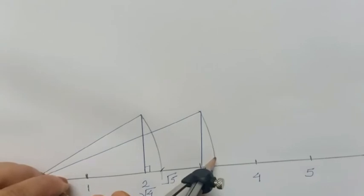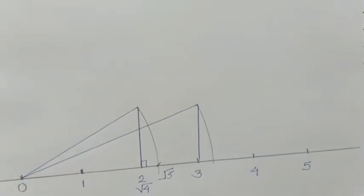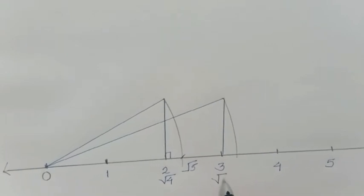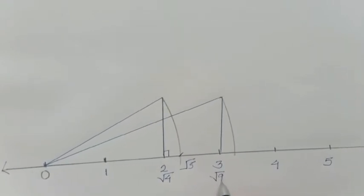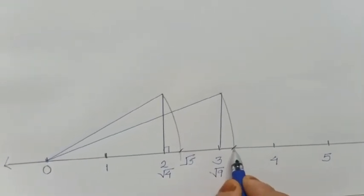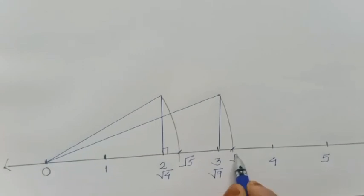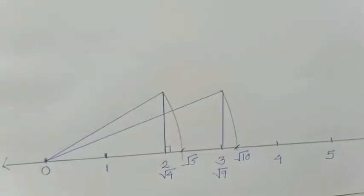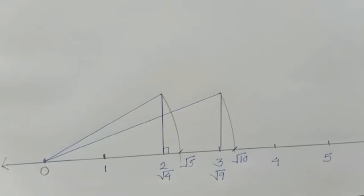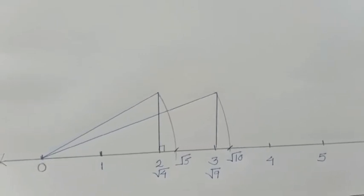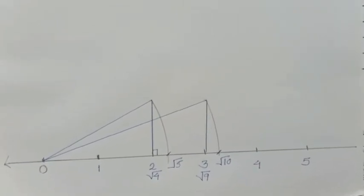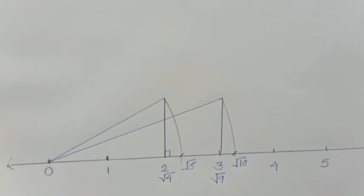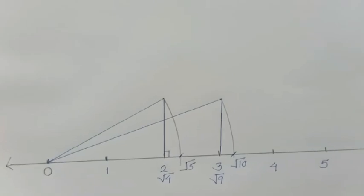Draw one arc to the right side of 3. Here 3 is nothing but root 9, so the next number lying after root 9 is root 10. Likewise, you can also draw root 2, root 3, and root 5. To draw root 2, first draw one perpendicular on 1, because 1 is nothing but root 1, and after root 1, root 2 will lie.